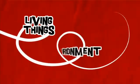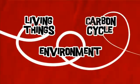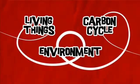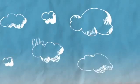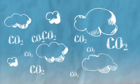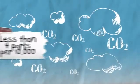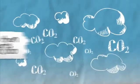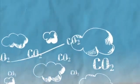Carbon moves from living things to the environment and back again in the carbon cycle. How does it work? Let's start in the sky. Carbon dioxide is present in the atmosphere in very small concentrations — less than four parts per 10,000 — but there is a lot of sky, so that's plenty of CO2.